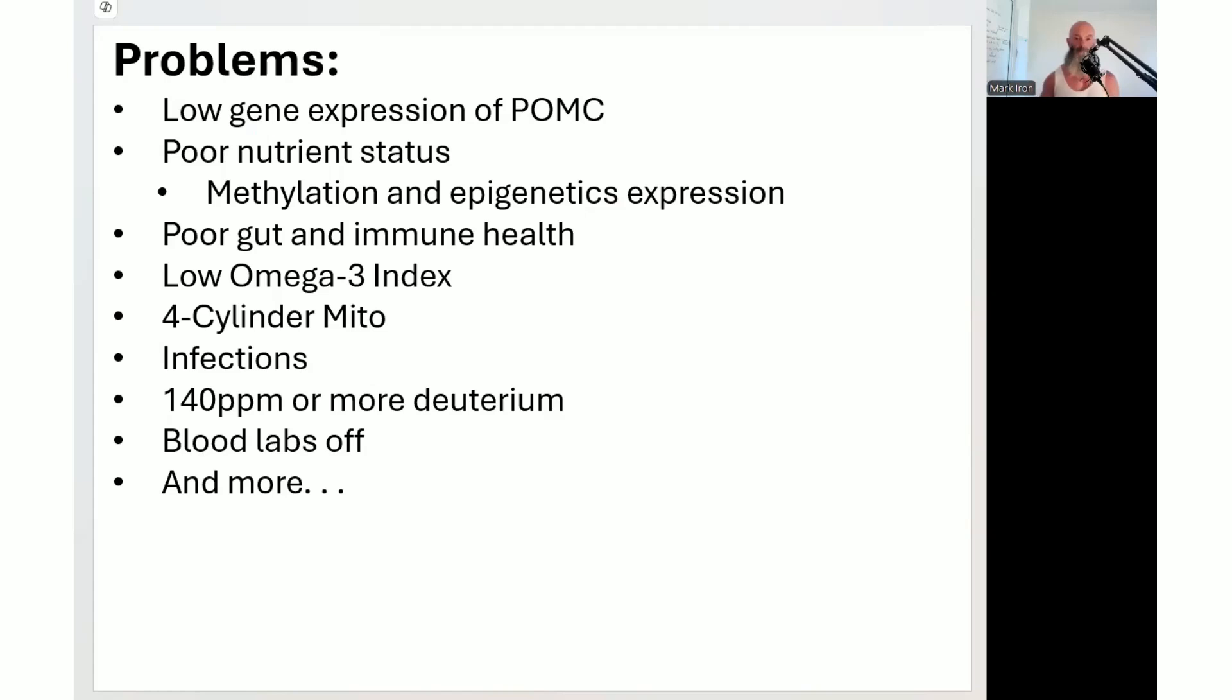The problems that you could have, this is the second part of the problem, this is number two, POMC. This is a pro-hormone, pro-opio-melanocortin, broken up into 10 other pro-hormone complexes. We've got to increase gene expression of POMC. It could be driven by poor nutrient status, methylation, epigenetic modifications over time can down-regulate gene expression of POMC. But you could also have poor gut and immune health.